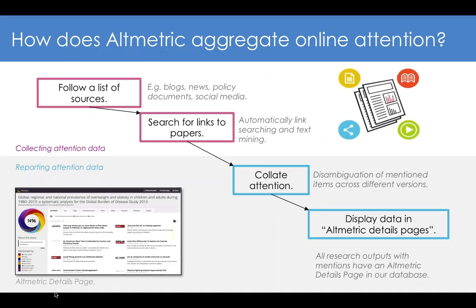A little bit more detail about how that works. We follow a big list of attention sources — news sites, blogs, social media like Twitter and Facebook. We look for links on those sources to domains that we recognise, for example nature.com. We'll follow that link and see where it takes us, and if we end up on a page that has a unique identifier for the item being discussed, perhaps a journal article, we'll match that up and then collate all of the attention together and present it in what we call the Altmetric Details page — a real-time record of all of the attention your work has received.